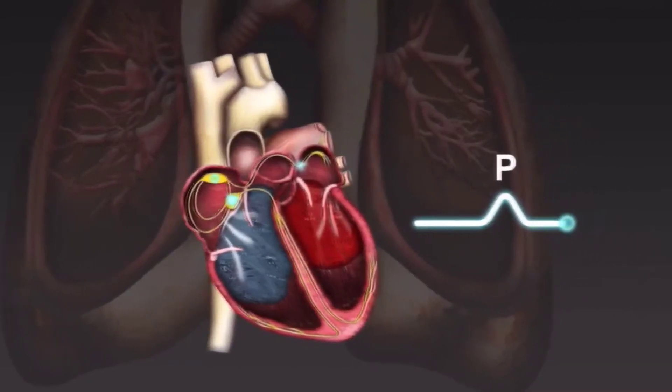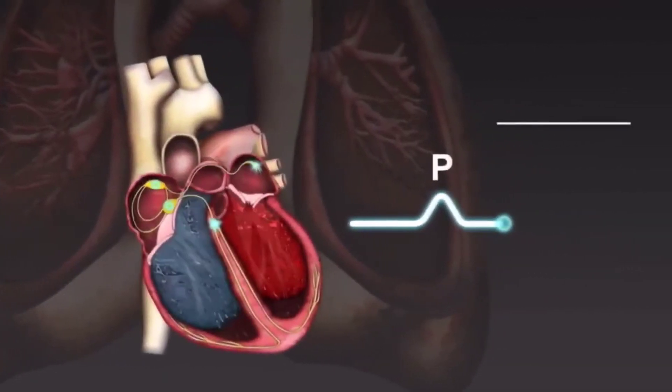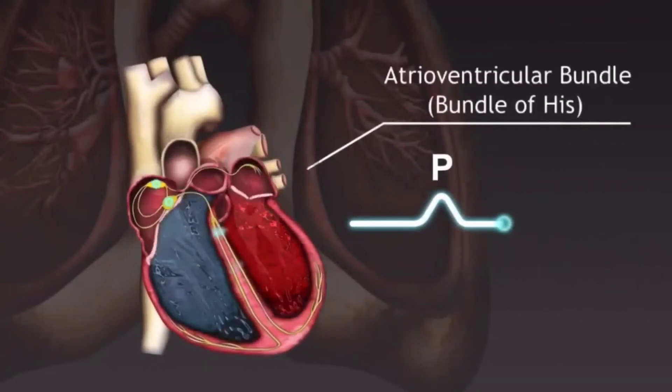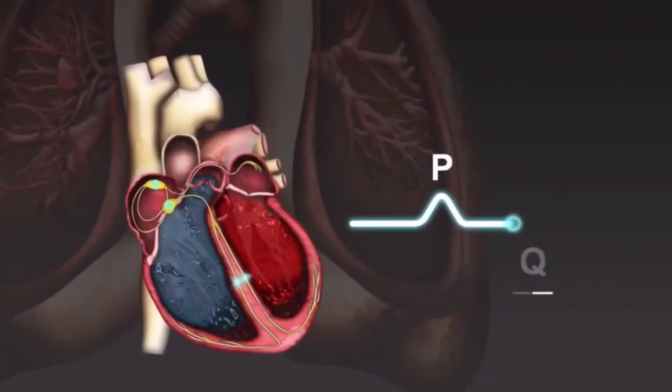As the impulse travels from the AV node to the bundle of His and along the upper part of the septum, the Q wave is produced.